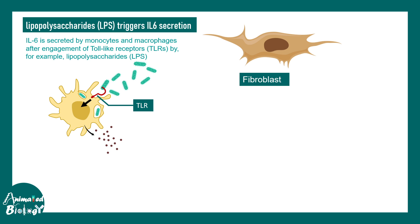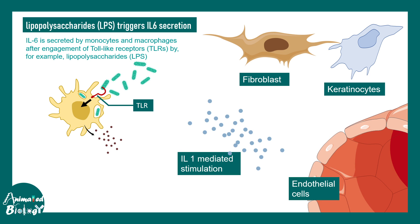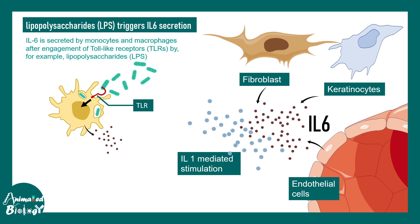Also, fibroblasts, keratinocytes, and endothelial cells can all secrete IL-6 upon stimulation by interleukin-1, which is another pro-inflammatory cytokine. If you want to know more about interleukin-1, you can find the video via the i button.